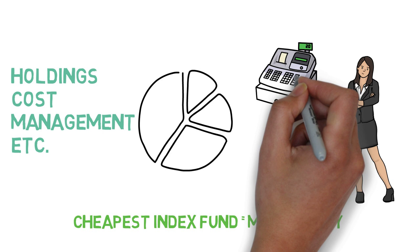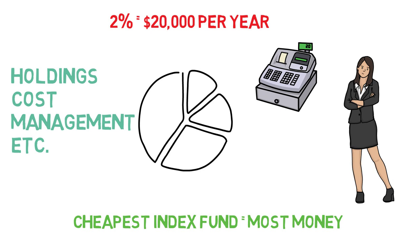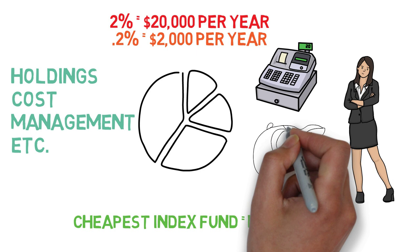For example, an expense ratio of 2% on a $1 million nest egg is $20,000 per year when compared to the average index fund which would only charge around one-tenth of that, or $2,000 per year. Just think of that $18,000 saved as additional money deposited right into your account. John Bogle recommends keeping most of your portfolio in low-cost index funds and investing for the long term.